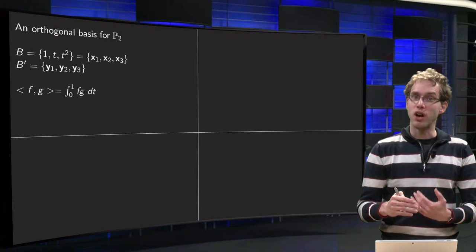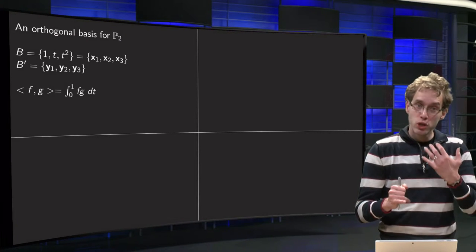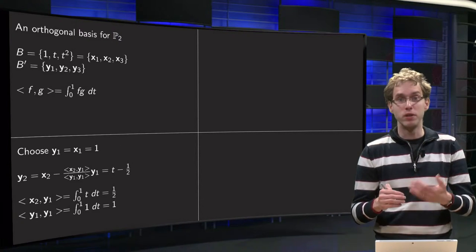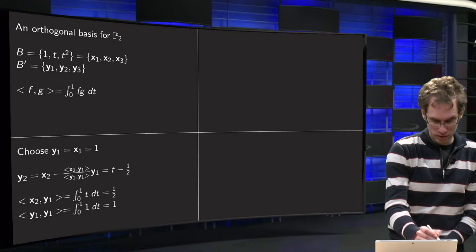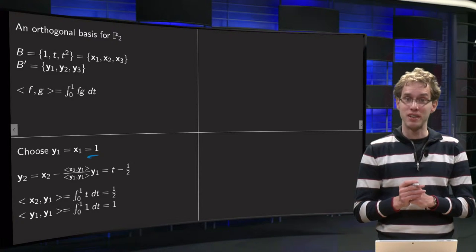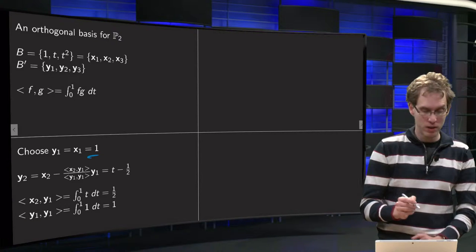So how did we start with Gram-Schmidt? Well you can always choose one factor as your starting factor. So we choose y1 to be just x1, just 1, the first one. And then we need to find our second factor, our y2.